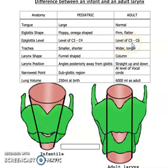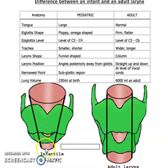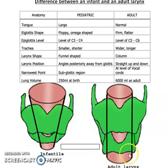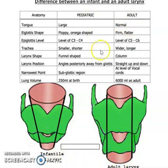The level of the epiglottis in infants is at the third and fourth cervical vertebra, while in adults it is slightly lower at the fifth and sixth cervical vertebra. The trachea is smaller and shorter in the pediatric age group — the internal diameter of the trachea is hardly three to five millimeters in pediatric patients, while in adults it is three centimeters.